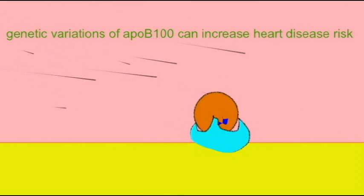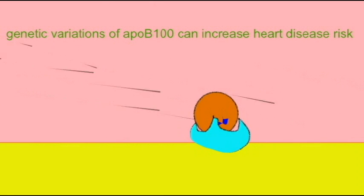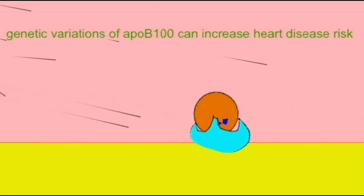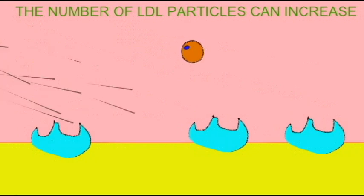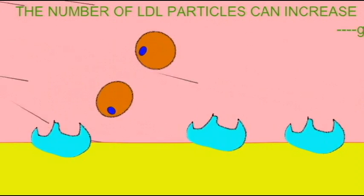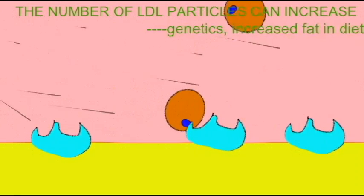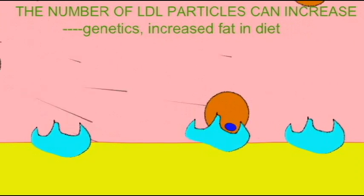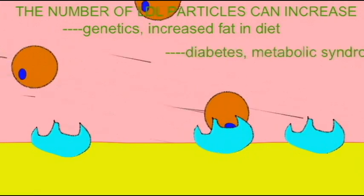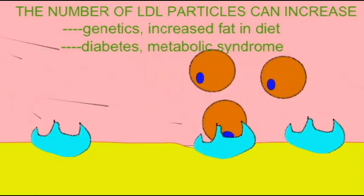This process of forward cholesterol transport doesn't always occur in the same fashion in all people, and some variations increase risk of heart disease. Some people have an alternate form of the protein ApoB100, which increases risk of heart disease.